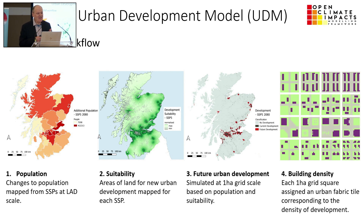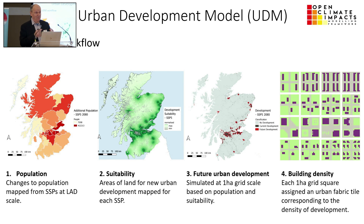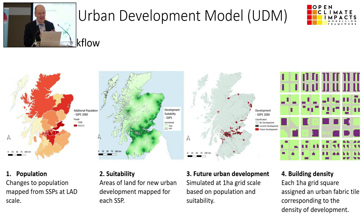Moving into step three, you see the growth in urban areas shown in red, reflecting that suitability. You can't build on an existing urban area, but you can build around it, or potentially on open space within it. Then in step four, we go to building density — we downscale at one-hectare grids to actual building configurations and building types.